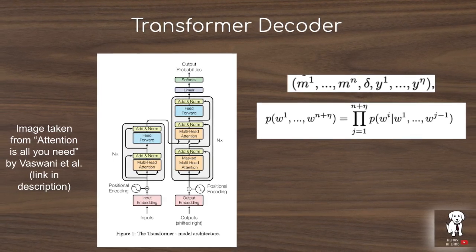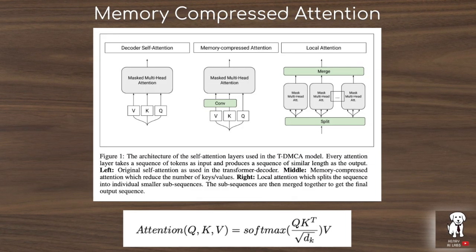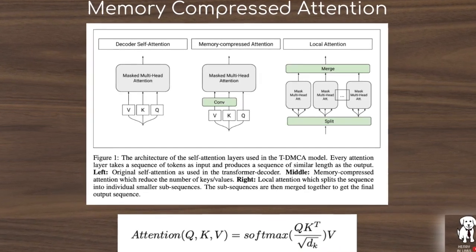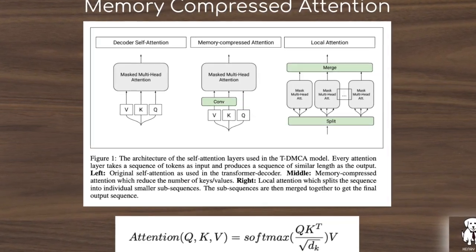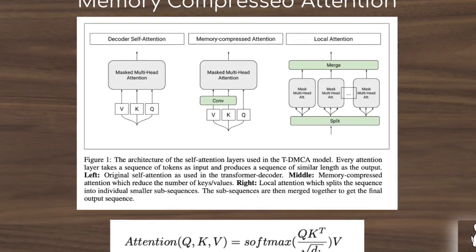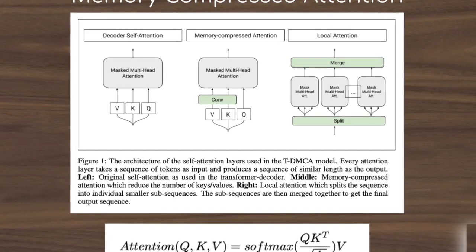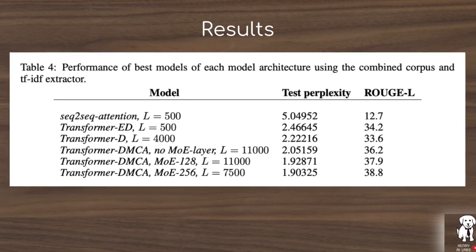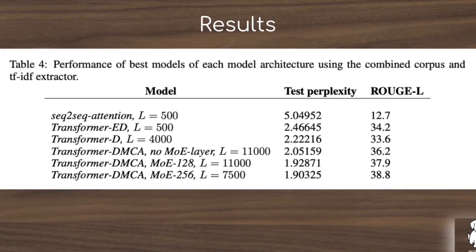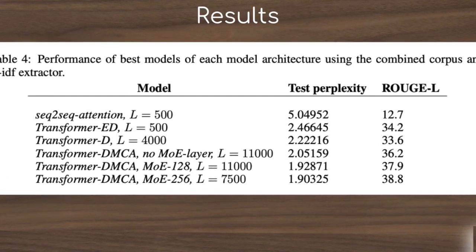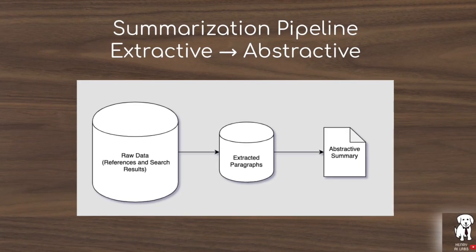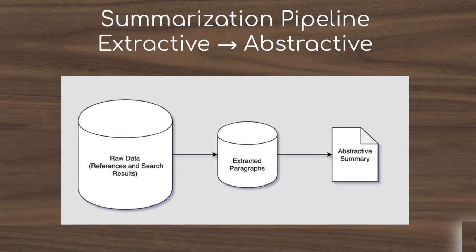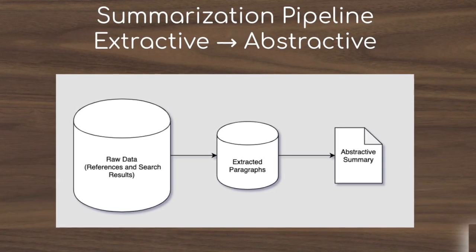This paper introduces a lot of interesting transformer details, like reducing the memory overhead by dropping the encoder half and using a decoder-only transformer. They also introduce a memory-compressed attention layer that approximates full attention by alternating between layers that either split the input sequence contiguously and pass each chunk into a separate attention layer, or use strided convolutions to reduce the size of the key and value embedding matrices.